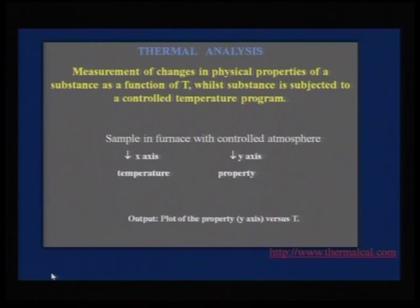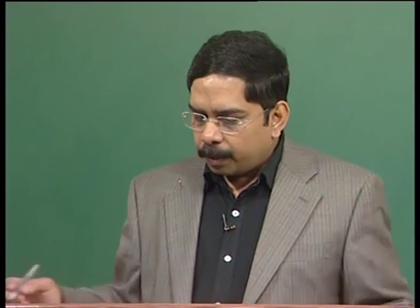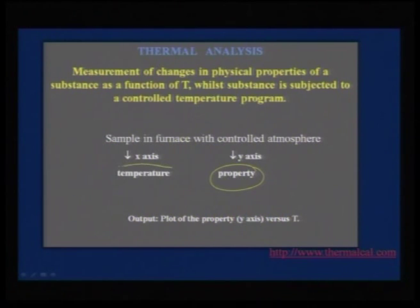So what does thermal analysis mean? It is a measurement of changes in physical properties of a substance as a function of temperature when the sample is undergoing a controlled temperature program. You can trace a variety of events using isothermal heating also. We can do a controlled temperature program which takes the sample from room temperature to a known temperature, and whatever happens is the property you map on the y-axis.